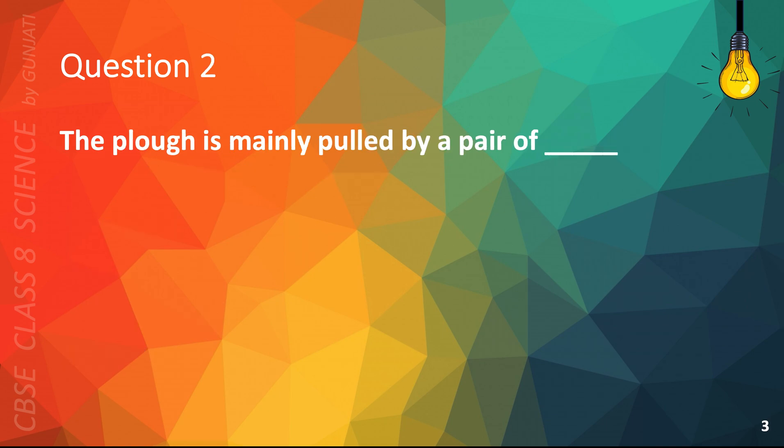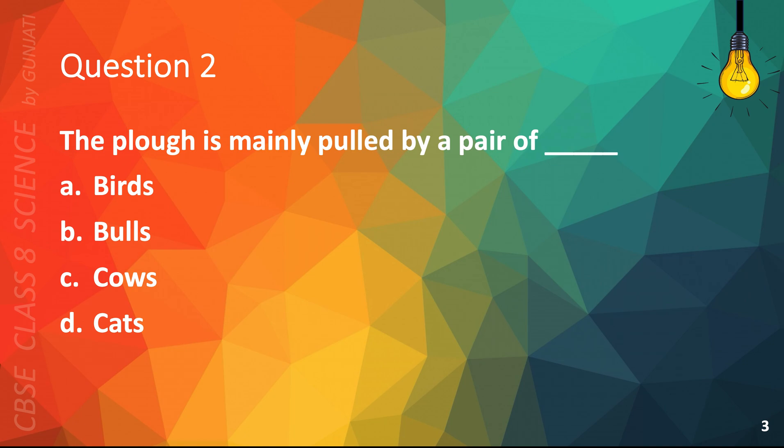Question 2. The plow is mainly pulled by a pair of A. Birds, B. Bulls, C. Cows, or D. Cats.